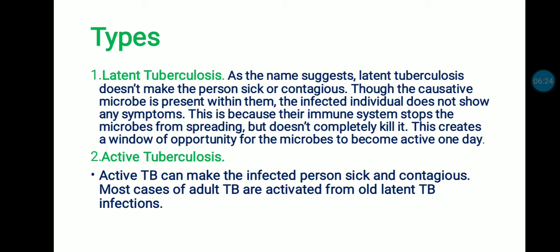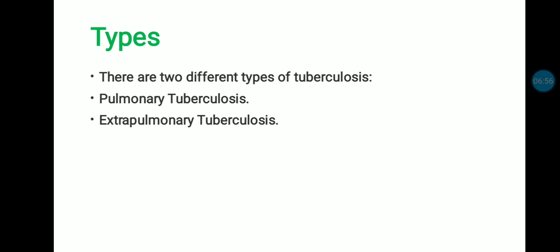The second type is active tuberculosis. Active TB can make the infected person sick and contagious. Most cases of adult TB are activated from old latent TB infections. Latent tuberculosis has no symptoms or sickness, but it is important that it should be cured with medicine; otherwise, it is converted into active tuberculosis.